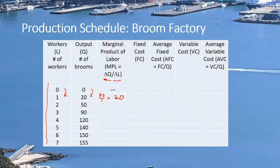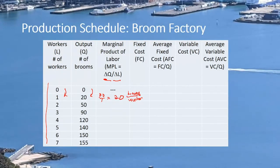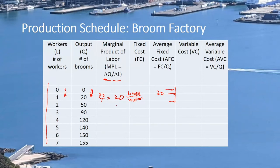But we should talk about units. The change on top is in brooms, and the change on the bottom is in workers. So we get 20 brooms per additional worker. In the first step, the marginal product of labor is 20 brooms per worker. Technically the MPL should be placed between the two steps, but for our purposes I'll notch it down to the next rung, and that's adequate.